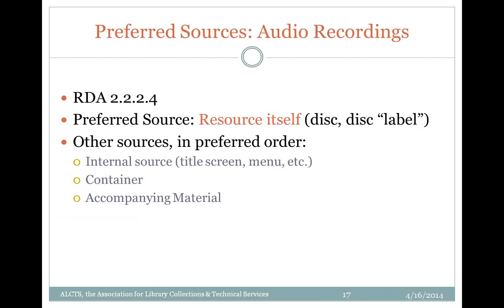The preferred source for audio recordings is the resource itself — the disc and its label. The disc label includes anything permanently affixed or printed on the disc surface. If the disc cannot be used as a preferred source, choose a substitute in order of preference: an internal source such as a title screen or menu; a container, which also includes the booklet visible through the jewel case; or any other accompanying material.